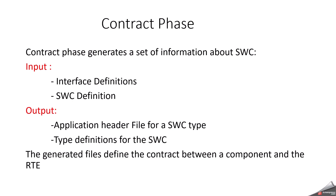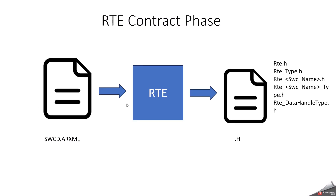Now, what is the contract phase, and what is the input and output for it? The input is the interface definition and your software component definition — consider your ARXML file. The output is the equivalent application header file and also the type definition for the particular software component. That's what is mentioned in this picture. If you see the software component description ARXML file — maybe your software component file which you created in the application layer — that will go to the RTE contract phase, and during that time, equivalent header files will be generated. That is the RTE contract phase.